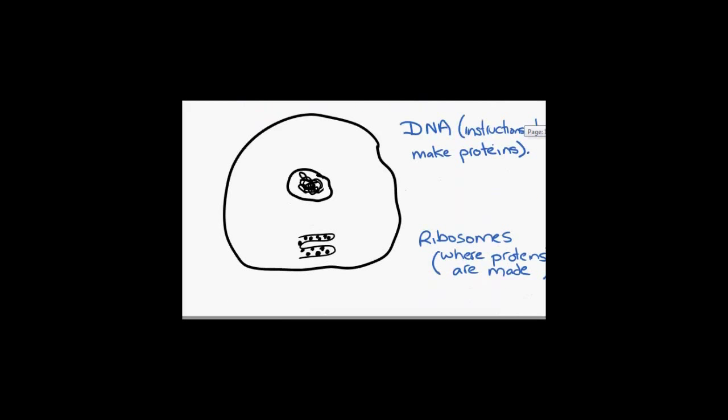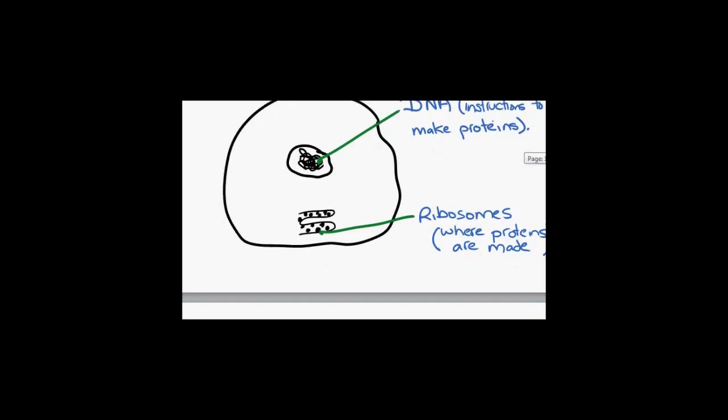Before we can look at protein synthesis, we need to ask where the key events occur within the cell. DNA is stored in the nucleus, while ribosomes are out in the cytoplasm. Remember, they can be free or bound. The first part of protein synthesis occurs in the nucleus, and the second part out in the cytoplasm.